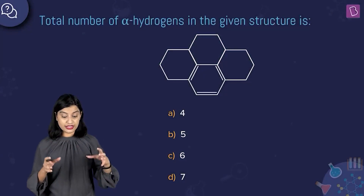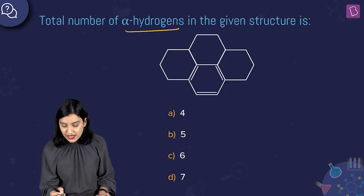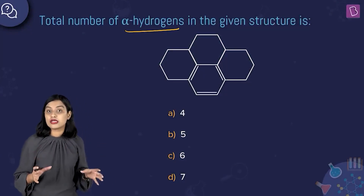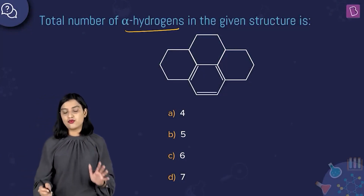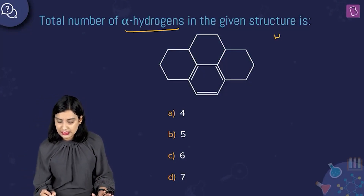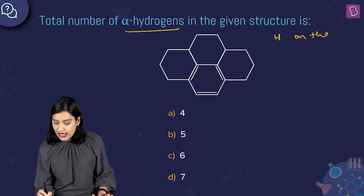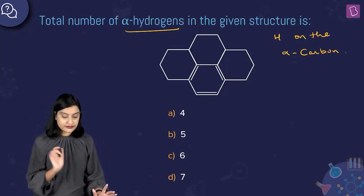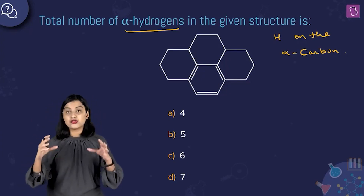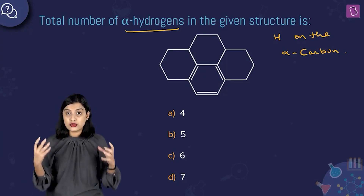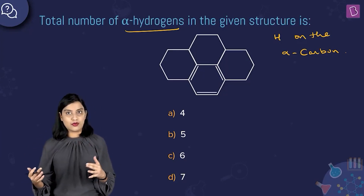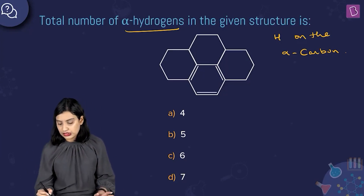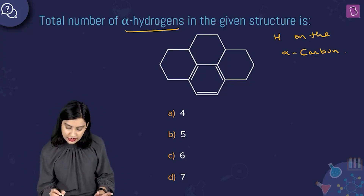Here they're asking us to find the total number of alpha hydrogens in the given structure. We have a polycyclic compound here. Basically, the hydrogen on the alpha carbon is called the alpha hydrogen. The alpha carbon is the carbon adjacent to your functional group — here the functional group is the double bond. So wherever you have a carbon adjacent to the pi bond, that is your alpha carbon.